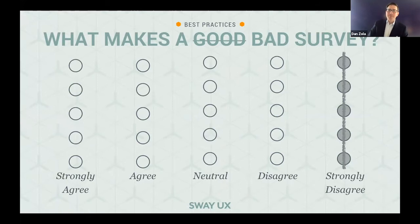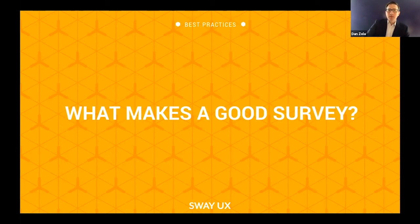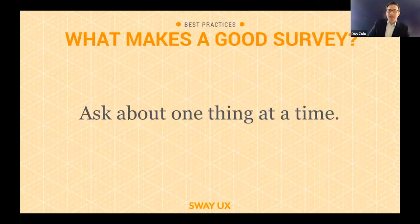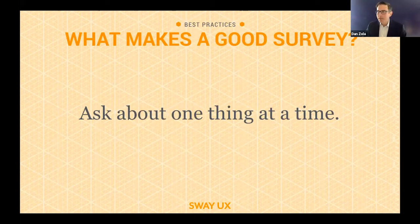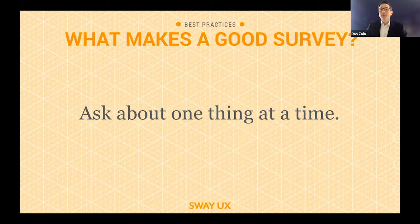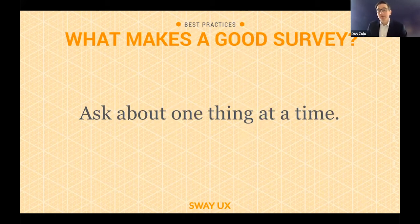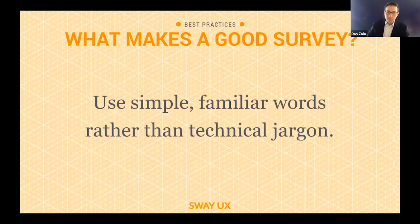So what do you do instead? For starters, ask about one thing at a time. It's far too common to see double-barreled questions like 'how do you feel about your salary and benefits?' — those are two different questions. Ask about one thing at a time. Use simple, familiar words, not technical jargon.